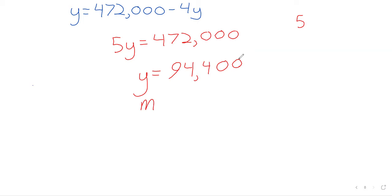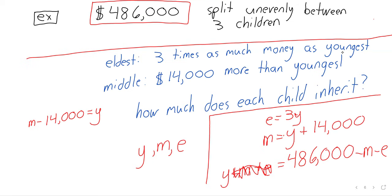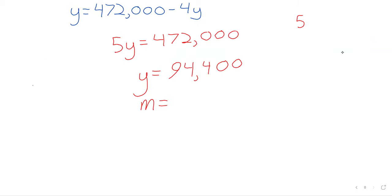Okay, and now we've done the strenuous part of the problem. So how much does the middle brother get? 14,000 more. 14,000 more, which is, let's see, 108,400. And the eldest brother, 283,200. I hear 283,200. Anyone else? So three times this, all right.